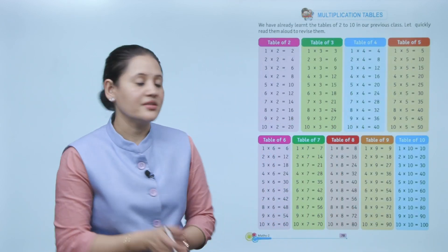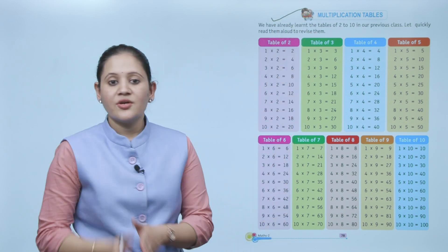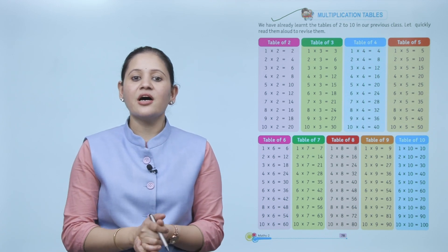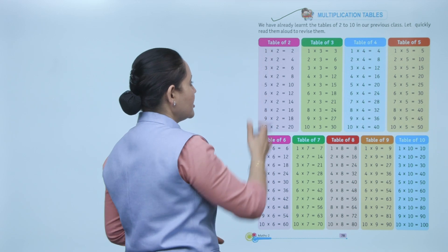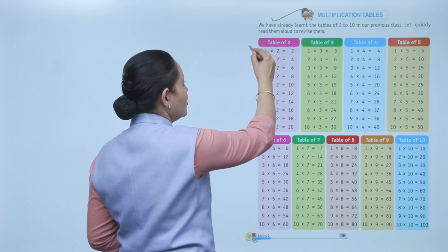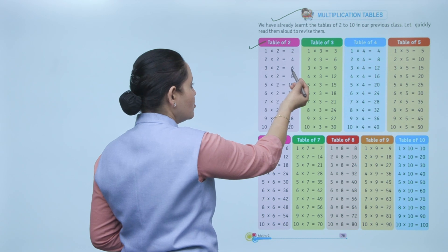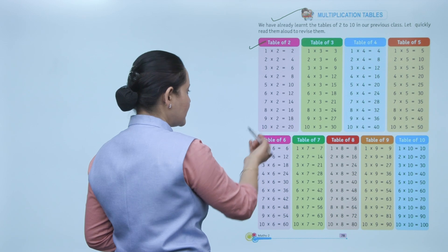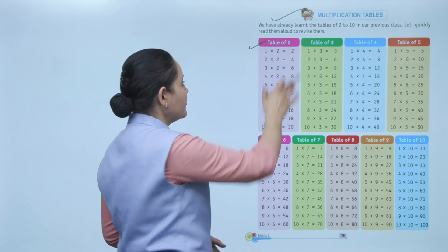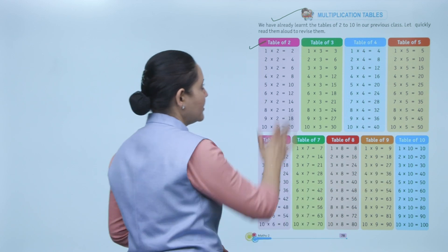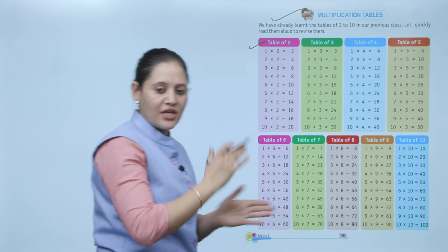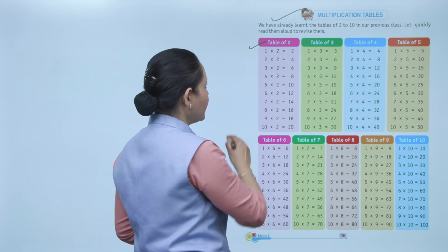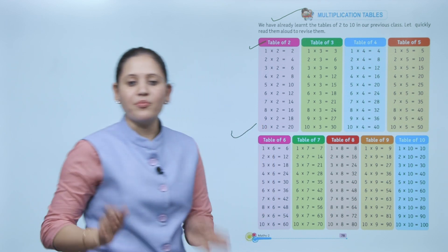Next: multiplication tables. We have already learned the tables of 2 to 10 in our previous class. Let us quickly read them aloud and revise them. The table of 2: 2×1=2, 2×2=4, 2×3=6, 2×4=8, 2×5=10, 2×6=12, 2×7=14, 2×8=16, 2×9=18, 2×10=20. Similarly, we can make tables up to 10, like 3×1, 3×2, and so on. You must revise all tables from 2 to 10 — this is very important for multiplication.